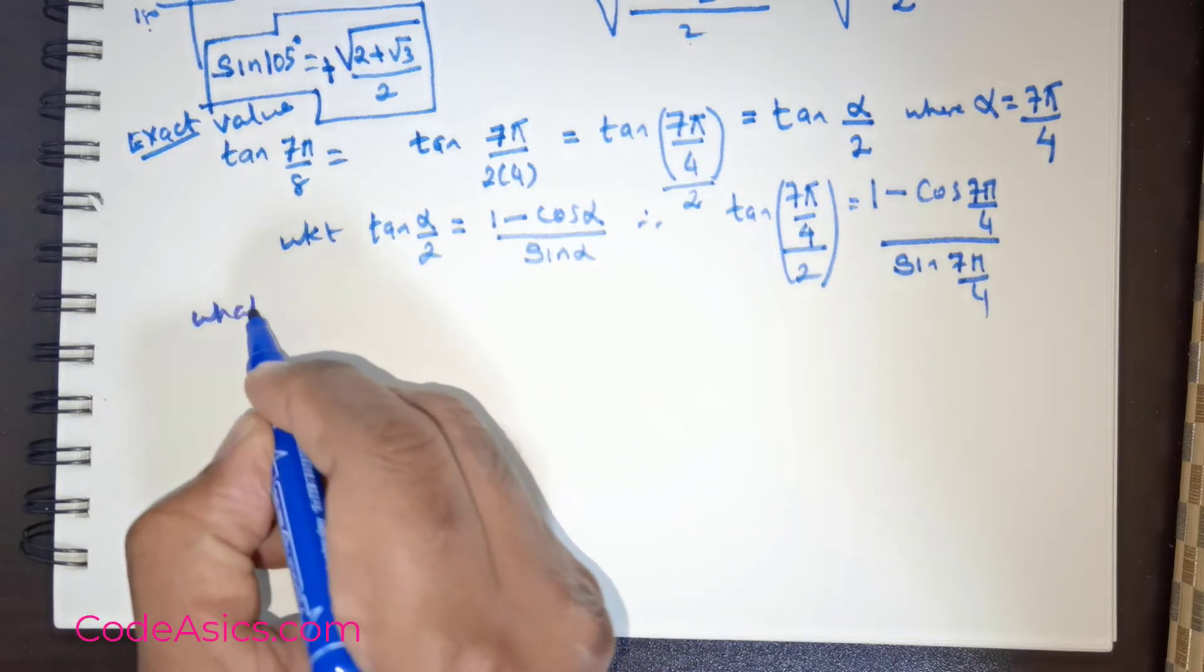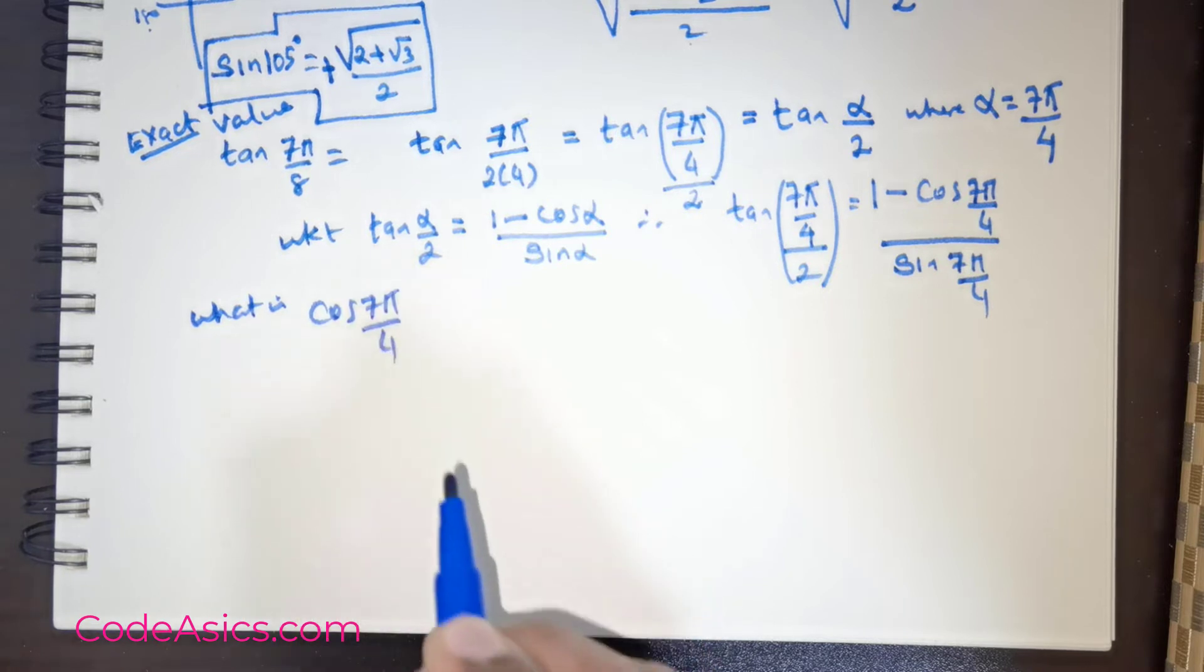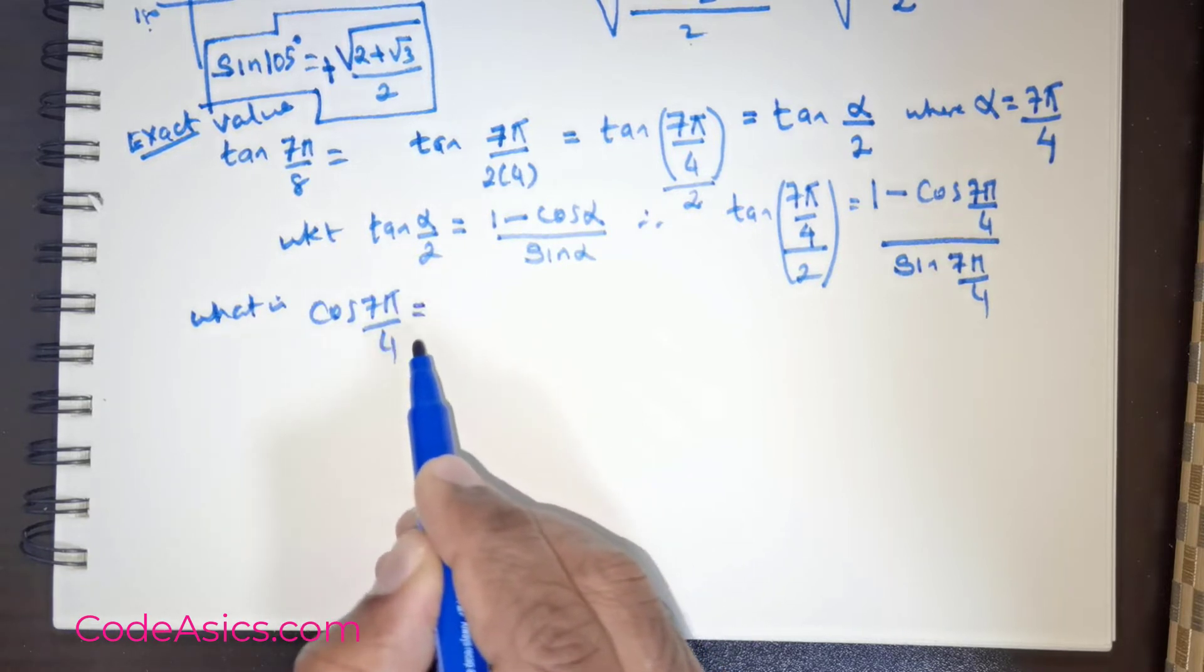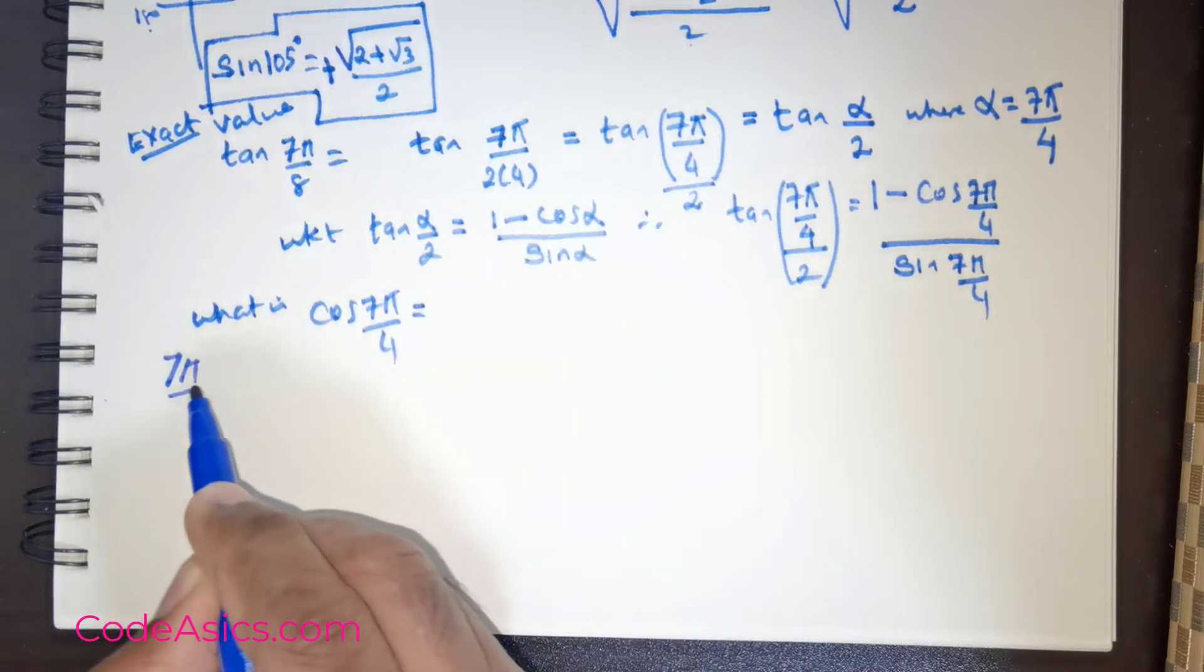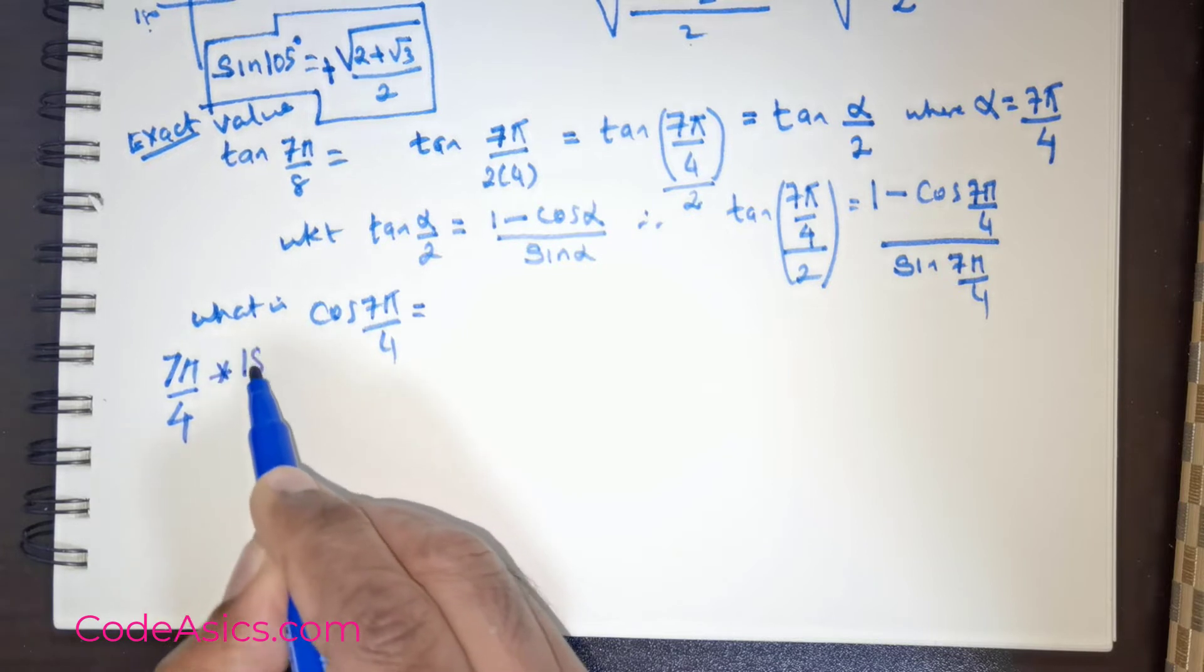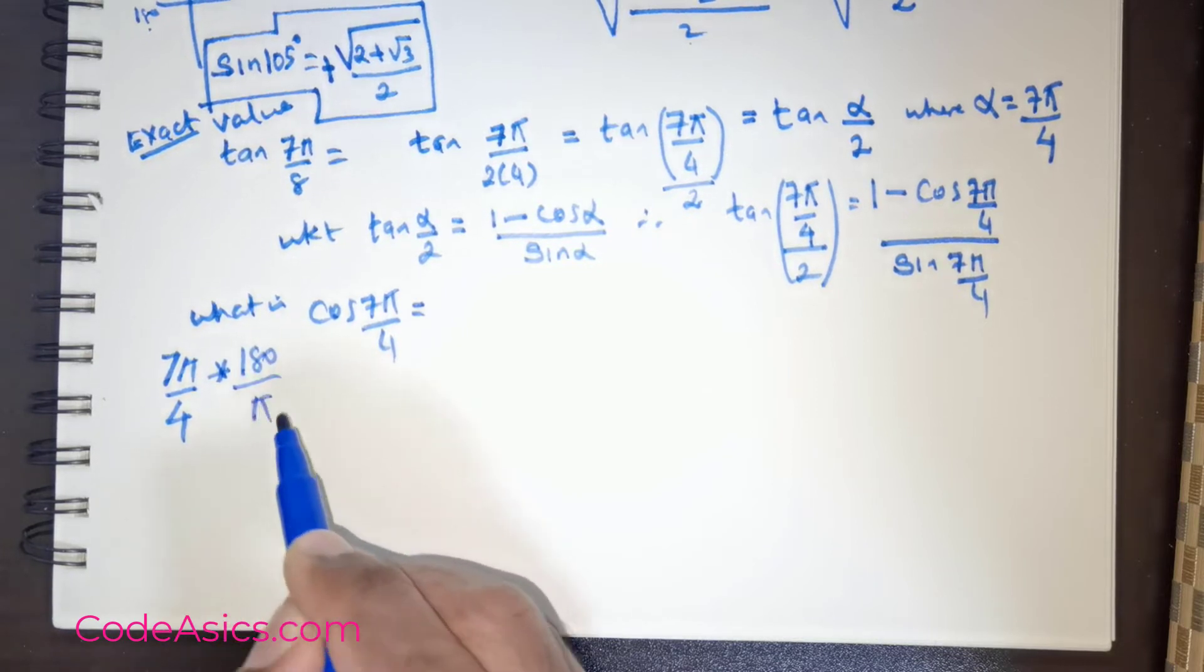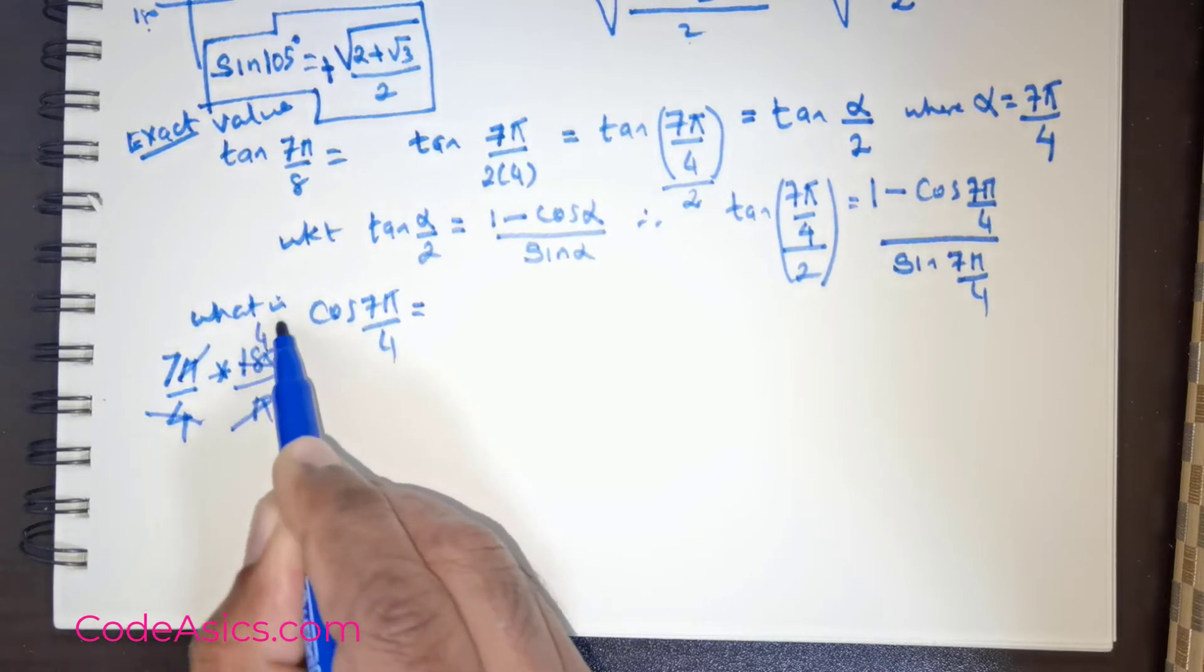Now if I were to take this 7π, let me convert this into degrees. I will multiply this by 180 divided by π. So the π's cancel. 4 divides 180, 45 times.